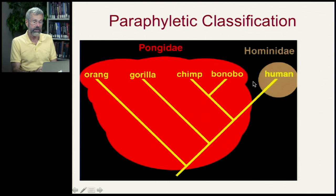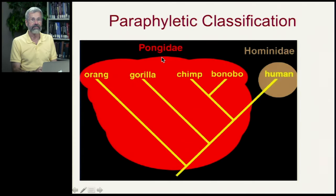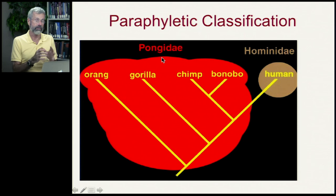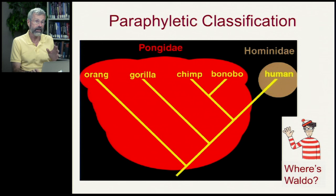There has always been a distinction between the Pongidae and the Hominidae — the hominids, human-type things. The term Pongidae is not useful to an evolutionary biologist because it's incomplete — it's paraphyletic. Where's Waldo in that classification? He's missing.